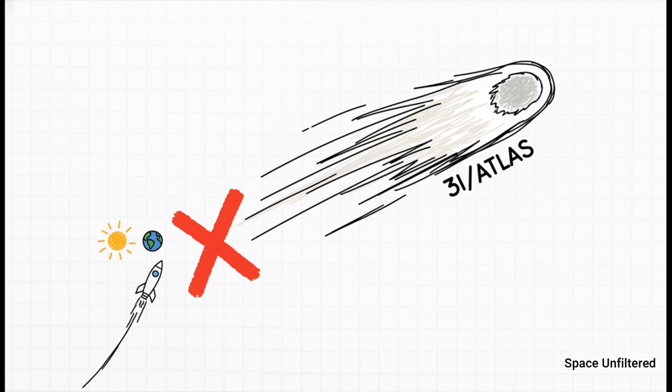The same high velocity that proves its interstellar origin also makes it an impossible target to chase. By the time it was discovered, it was already moving much too fast for any existing rocket to catch up to it.